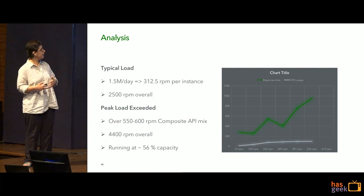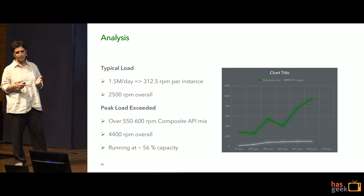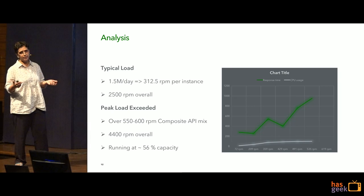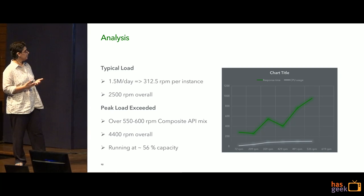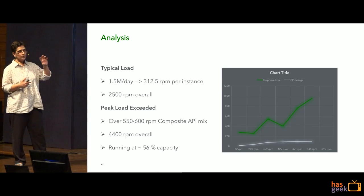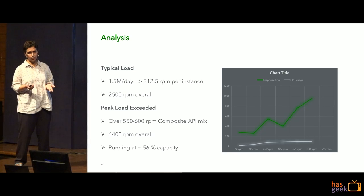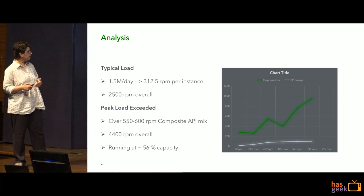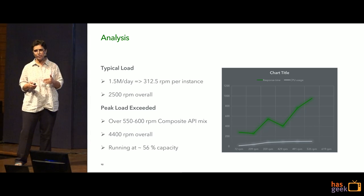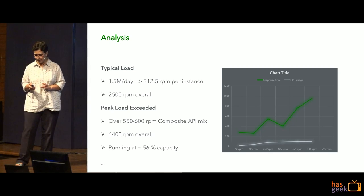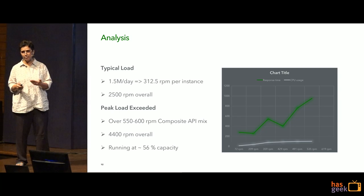In our application, we saw a typical load of about 1.5 million requests per day, which is about 300 requests per minute. Overall we were able to process 2,500 requests per minute across the entire production application system. The test indicated that peak load was exceeded when you went above 550 to 600 requests per minute with a composite API mix of the top APIs — which equated to about 4,400 requests per minute overall, meaning our production systems were running at 56% capacity. We also knew we had a predictable spike to about 4,500 requests per minute at very specific times, and that's where we decided this exercise would help us set up auto-scaling policies in AWS.